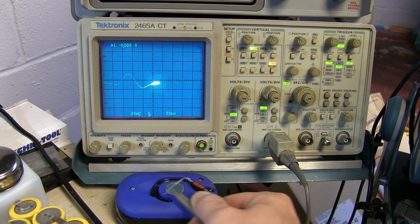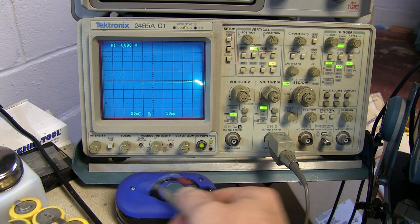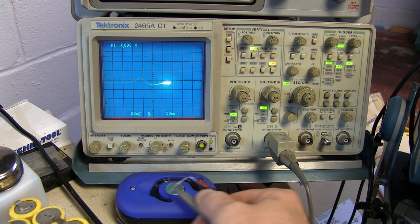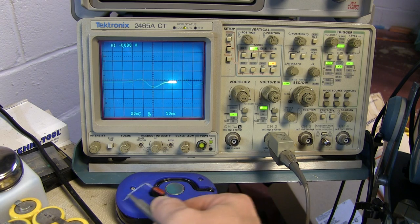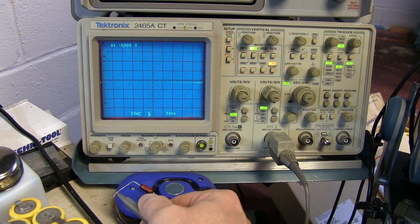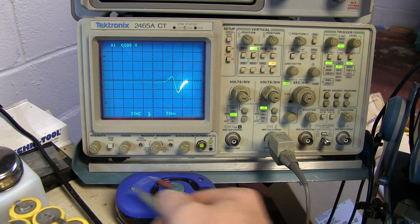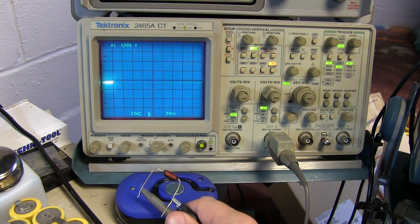So what's happening is the changing magnetic field is inducing a current in the coil. That current is then impressing a voltage across the input impedance of the scope probe. So we can see how a changing magnetic field can induce a current and cause a voltage to appear in a circuit.